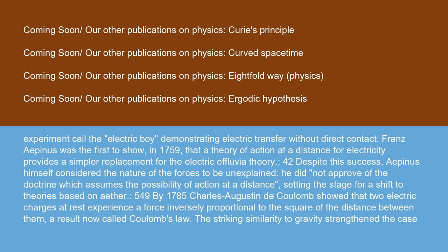Gray developed an experiment called the electric boy demonstrating electric transfer without direct contact. Franz Aepinus was the first to show, in 1759, that a theory of action at a distance for electricity provides a simpler replacement for the electric effluvia theory. Despite this success, Aepinus himself considered the nature of the forces to be unexplained. He did not approve of the doctrine which assumes the possibility of action at a distance, setting the stage for a shift to theories based on aether.